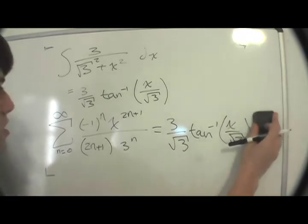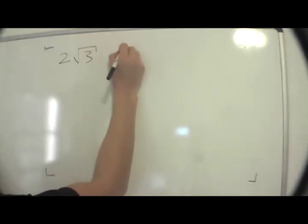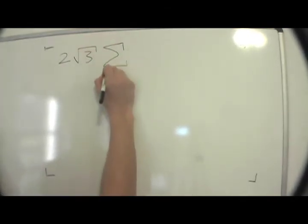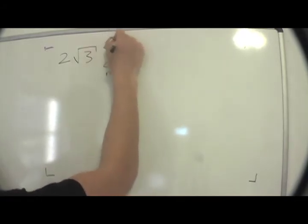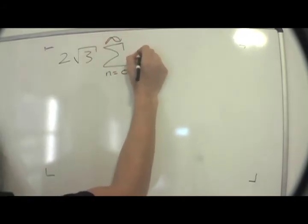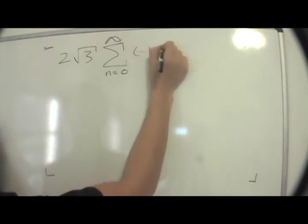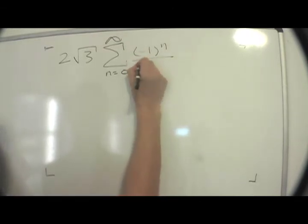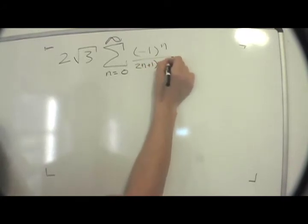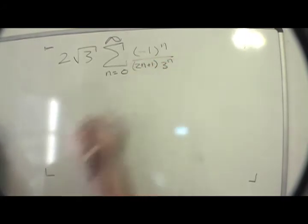So finally, what we're going to do is take what we originally wrote. The original sum was this: it was 2 square root of 3 times the sum from n equals 0 to infinity of minus 1 to the n over 2n plus 1 times 3 to the n.